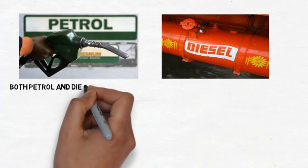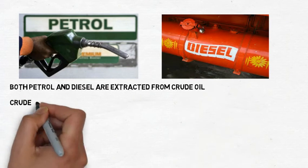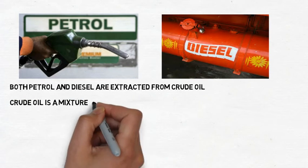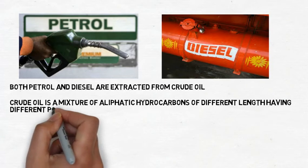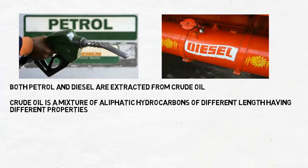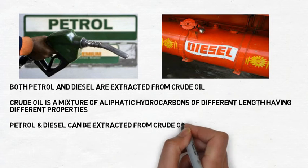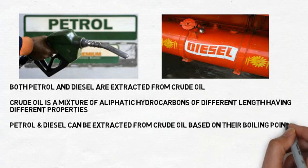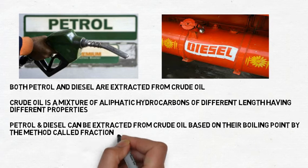Both petrol and diesel are extracted from crude oil. Crude oil is a mixture of aliphatic hydrocarbons of different chain lengths having different properties. The source of crude oil is natural oil fields. Petrol and diesel can be extracted from crude oil based on their boiling point by the method called fractional distillation.